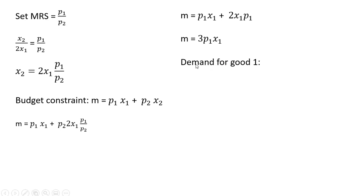Let's solve for x₁, which will be the demand for good 1. Dividing through by 3p₁, we get x₁ = m/(3p₁).